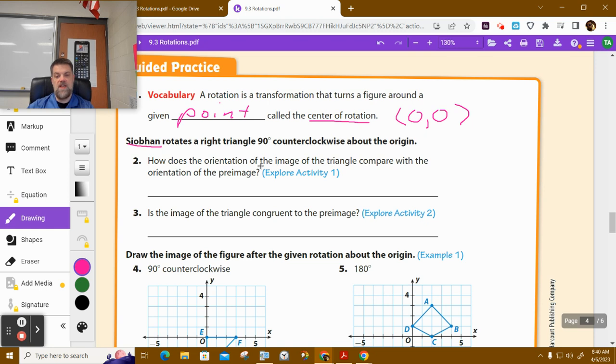How does the orientation of the image of the triangle compare with the orientation of the pre-image? Well, the orientation is not the same. So you got to read this carefully. If the question said size and shape, you would say yes, it's the same.